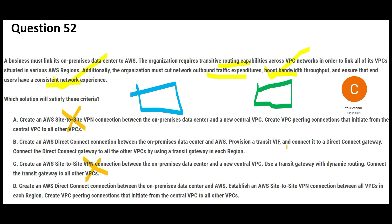The difference between B and D is that B uses a VIF (Virtual Interface) and D uses Site-to-Site VPN. If you want a consistent network experience, do not mix and match — don't combine AWS Direct Connect here with Site-to-Site VPN there and VPC peering. It's like putting a Honda Civic engine in a Ferrari: you won't get high consistent performance. Option D is that kind of mix-and-match, so B is my answer.